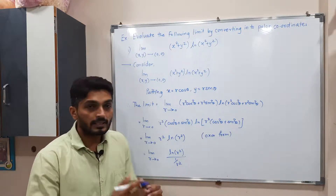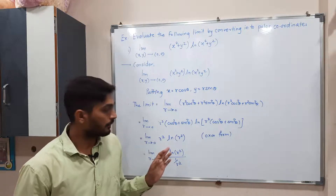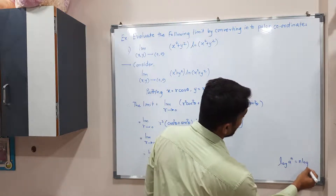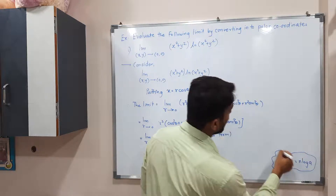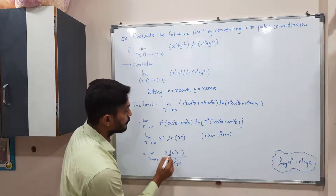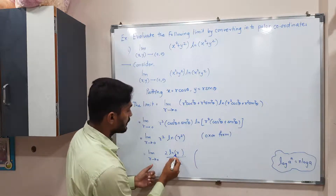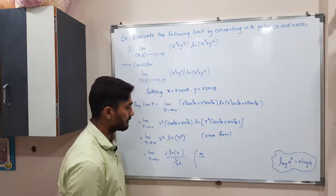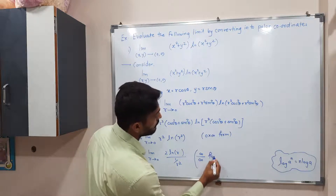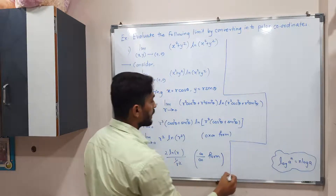Since r² is in the denominator of the denominator, it shifts to the numerator, giving back the same expression. Using the log property log(aⁿ) = n·log(a), we write ln(r²) as 2·log(r). Putting r = 0, log(0) gives −∞ in the numerator and 1/0 gives ∞ in the denominator — so we have the ∞/∞ form, and L'Hôpital's rule applies.